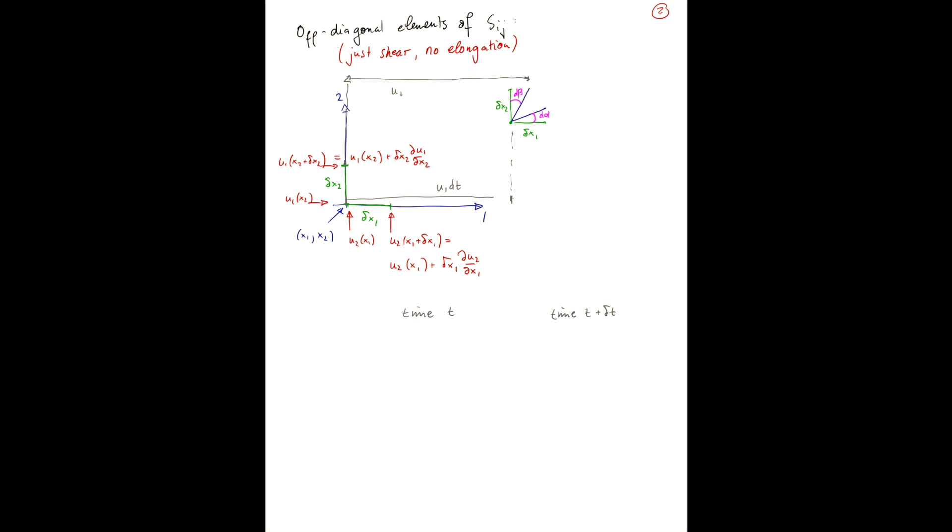is u1 plus delta x2 du1 dx2 times dt. So the length of displacement here, delta l1, is just the difference between these two, which is delta x2 du1 dx2 times dt. Similarly, the displacement from down here to up here is u2 dt. And for the other end of the line element, you go from down here to up here and your displacement is u2 plus delta x1 du2 dx1 times dt. So the difference, delta l2, is delta x1 du2 dx1 times dt.